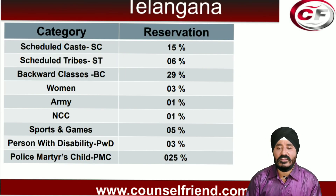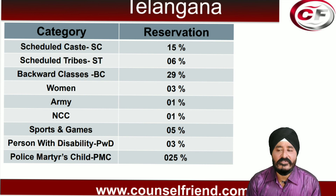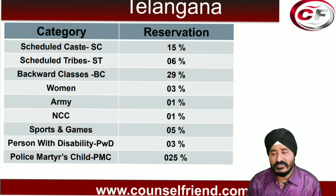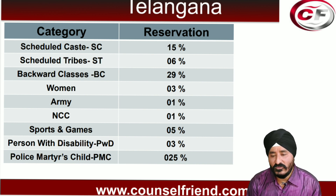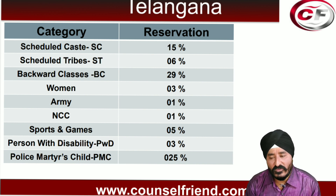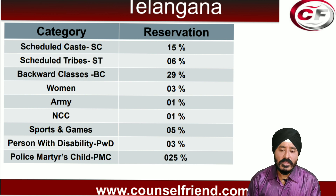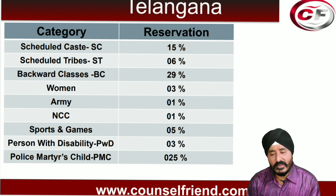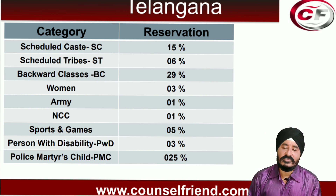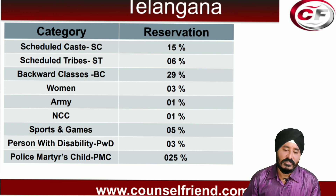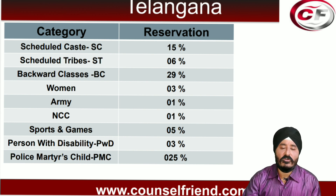For the Telangana reservation system: SC — 15 percent; ST — 6 percent; Backward Classes — 29 percent; Women candidates — 3 percent; Army — 1 percent; NCC — 1 percent; Sports and Games — 5 percent; Persons with Disability — 3 percent; Police Martyr Children — 0.25 percent. Remaining seats are for the general or open category.